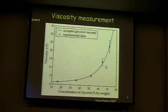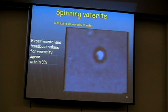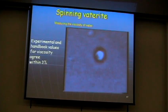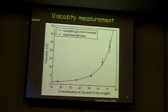We can see that the method is pretty good. We measure viscosity of water first, and it was within 3% of the value in the reference. Then I'll show you just one more — we put the particle into glycerol solution and check it against values from the handbook, and you can see that this is pretty good.